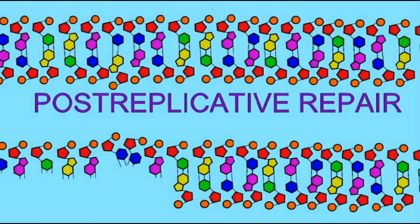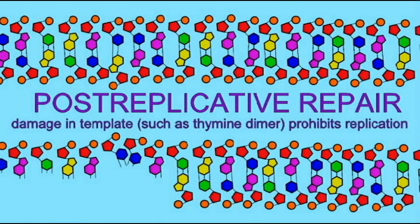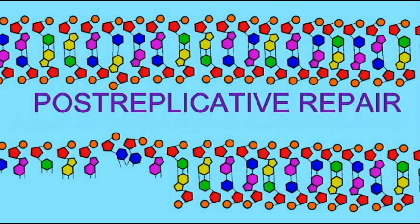In post-replicative repair, a cell has a problem. After the DNA strands unzip, if one of the two strands has damage, then it cannot serve as a template for a new strand.